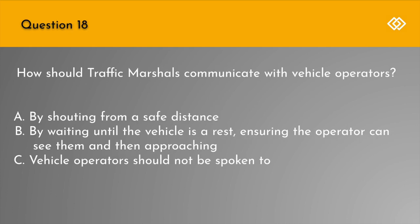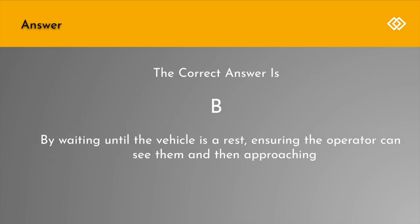Question 18. How should traffic marshals communicate with vehicle operators? A. By shouting from a safe distance. B. By waiting until the vehicle is at rest, ensuring the operator can see them, and then approaching. Or C. Vehicle operators should not be spoken to. The correct answer is B: By waiting until the vehicle is at rest, ensuring the operator can see them and then approaching.